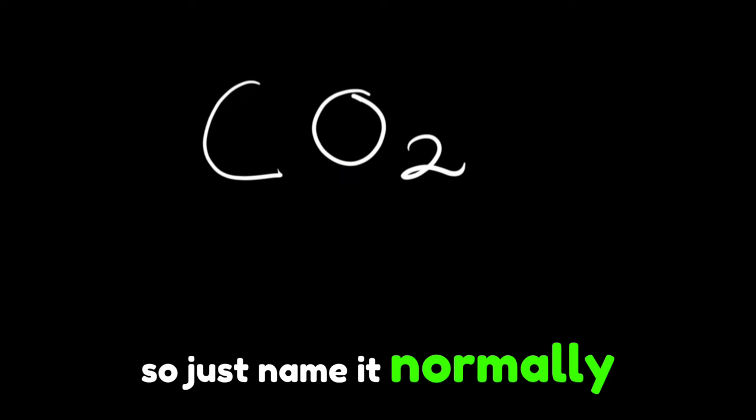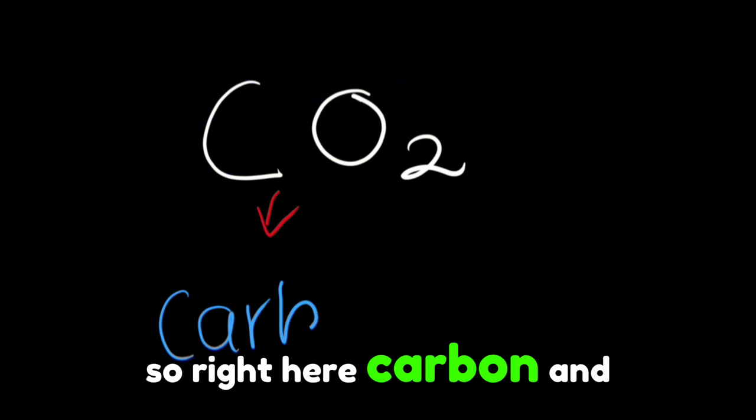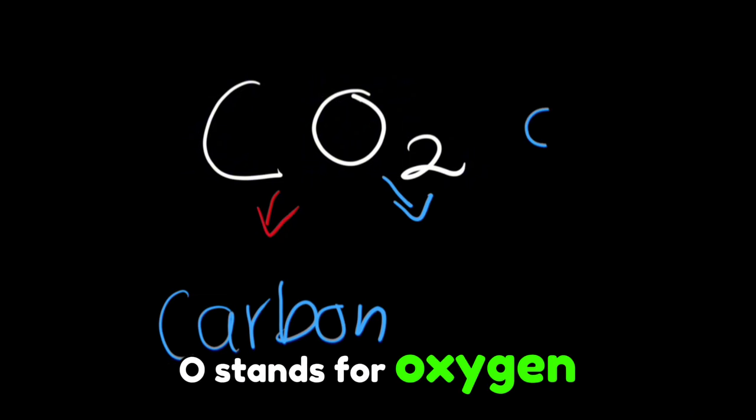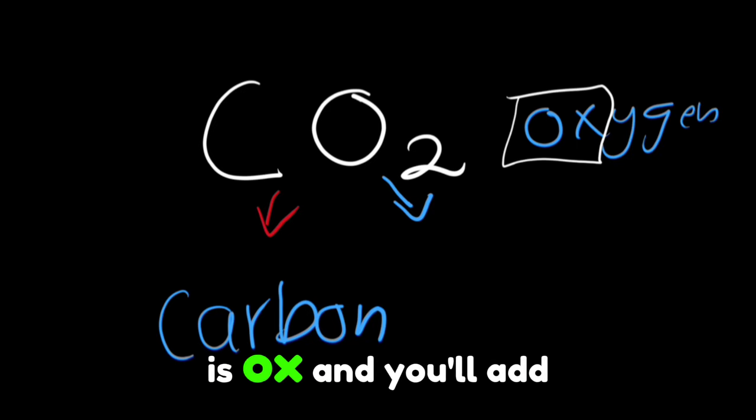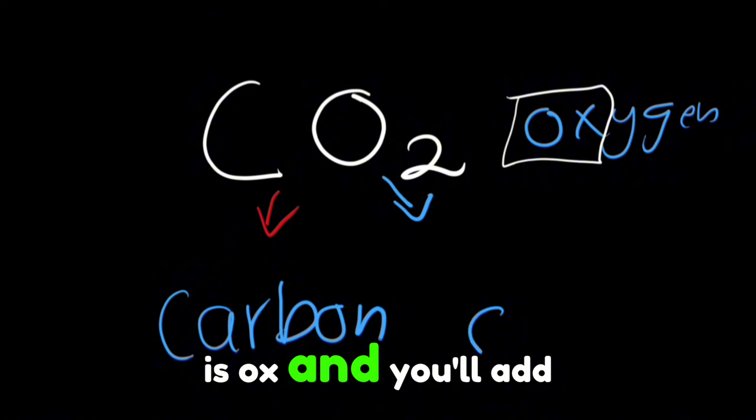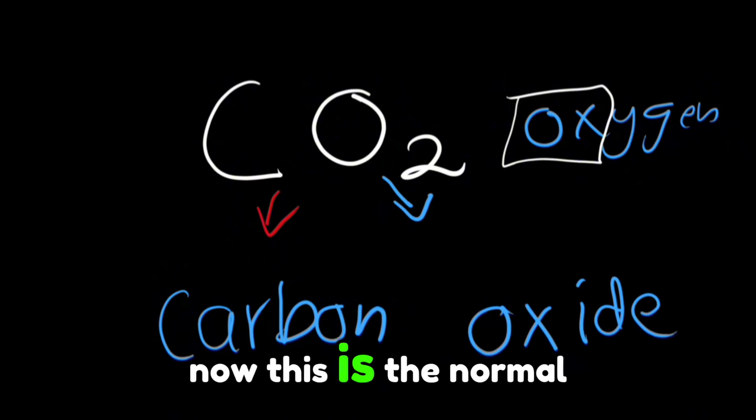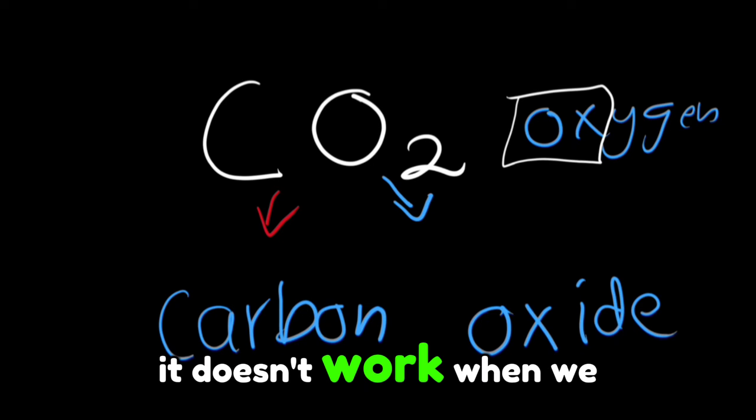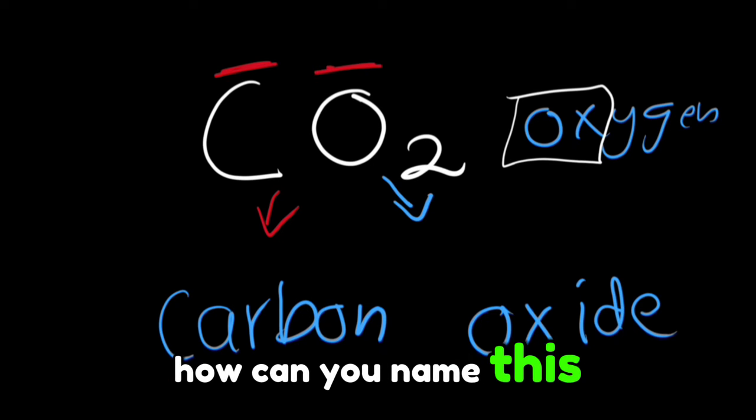For example, if you have CO2, how can you name this? You'll name it normally. C stands for carbon, so you write carbon. O stands for oxygen, but you'll take the root, which is ox, and add ide. Now this is the normal naming. It doesn't work when we have a non-metal and a non-metal.